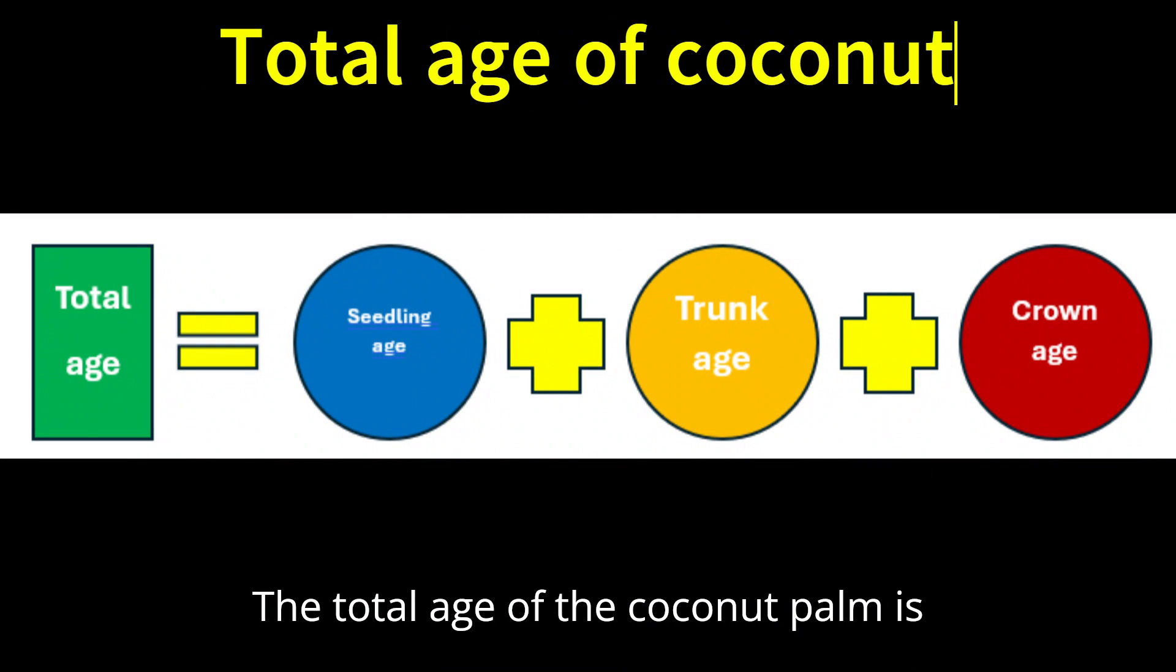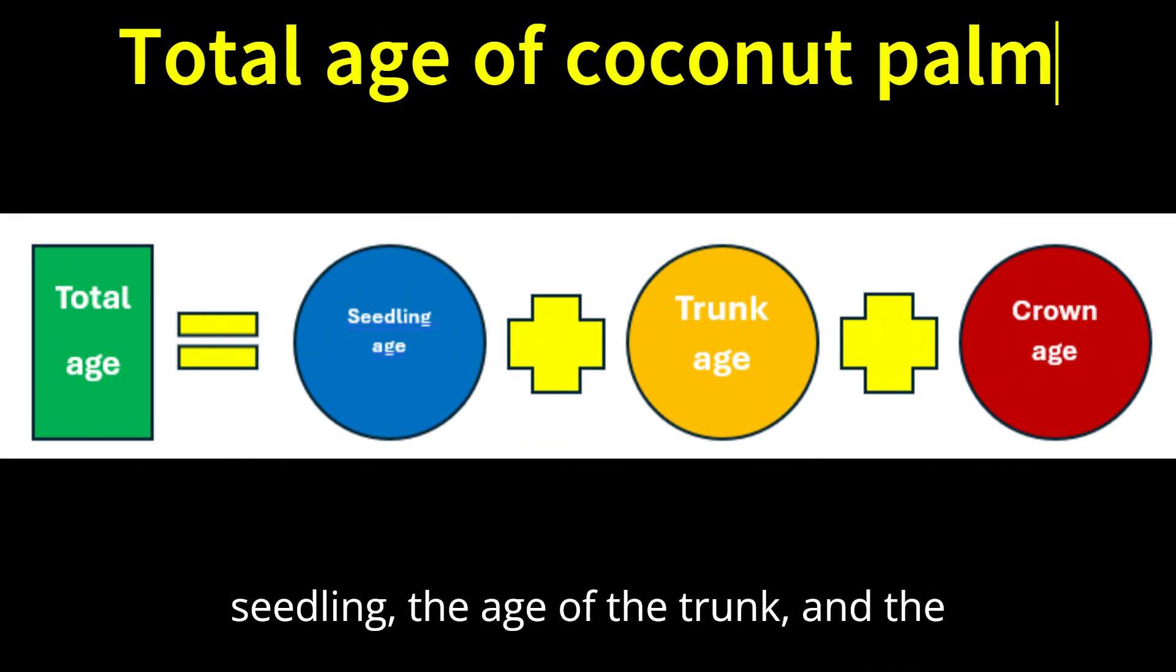The total age of the coconut palm is estimated by adding the age of the seedling, the age of the trunk, and the age of the crown.